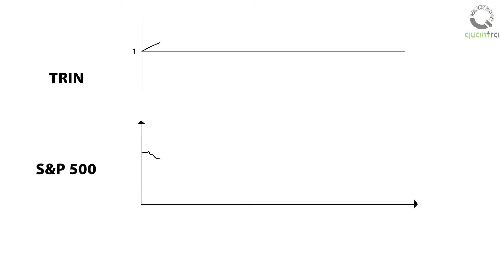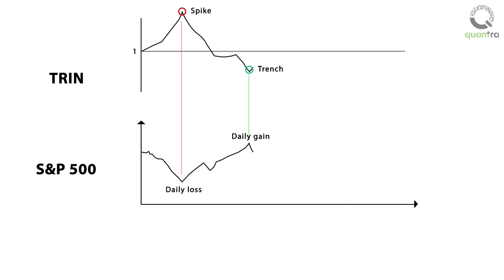When TRIN is plotted against time, the spikes, or upward movements, coincide with large daily losses in markets, and troughs, or downward movements, coincide with large daily gains in the market.